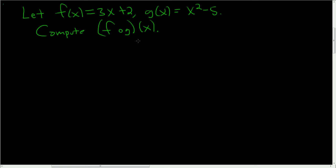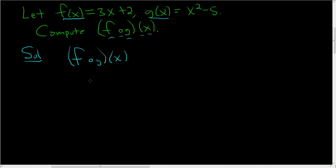So we have two functions, f and g, and we're asked to compute f∘g of x. That's called the composition of f and g. So you start by writing down f∘g of x. What does this mean? This is equal to f of g of x. The g always goes on the inside. So the first thing you want to do is start from the inside — you want to start with little g.